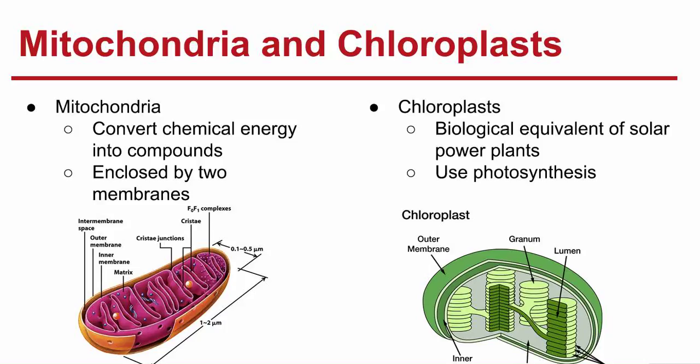Next we have the chloroplasts. Plants and some other organisms contain chloroplasts — organelles that capture the energy from sunlight and convert it into chemical energy using a process called photosynthesis, which will be discussed in Chapter 8. They're the biological equivalent of solar power plants. Inside each chloroplast there are thylakoids, which are single discs; the granum, which is a full stack of thylakoids; the stroma, which is the outside of the thylakoids; and the lumen, which is the inside of the thylakoids. Chloroplasts actually contain their own genetic information, which led to the endosymbiotic theory, suggesting they may be descended from independent organisms.